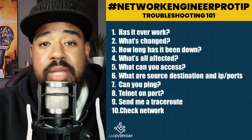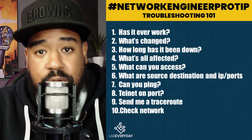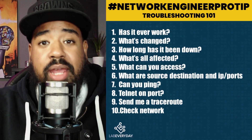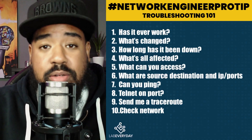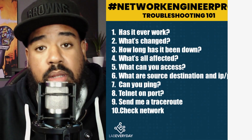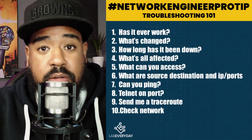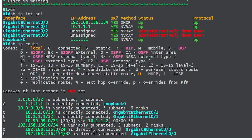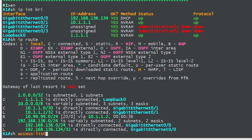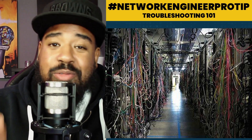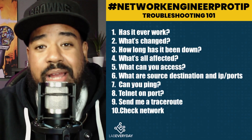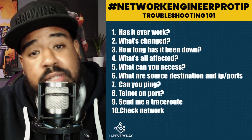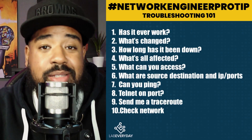Typically in this scenario we're going to talk about edge routers. You get an escalation from the help desk saying a user cannot connect to the internet. The first thing you may want to do is hop on the router, look at the interfaces, check the routes, check access lists, go to the data center to see if anything's unplugged — but that's really not the right approach.